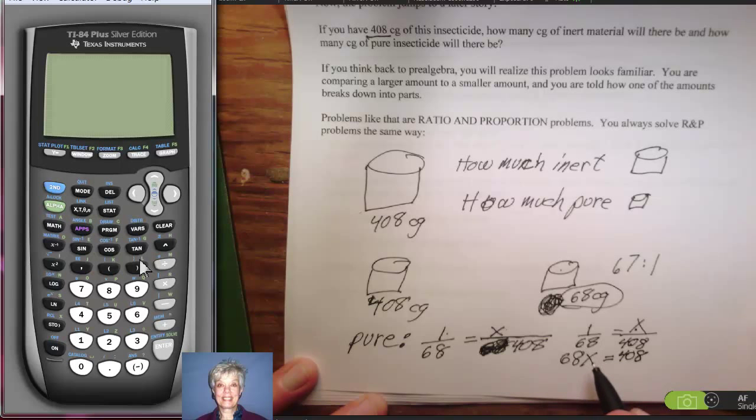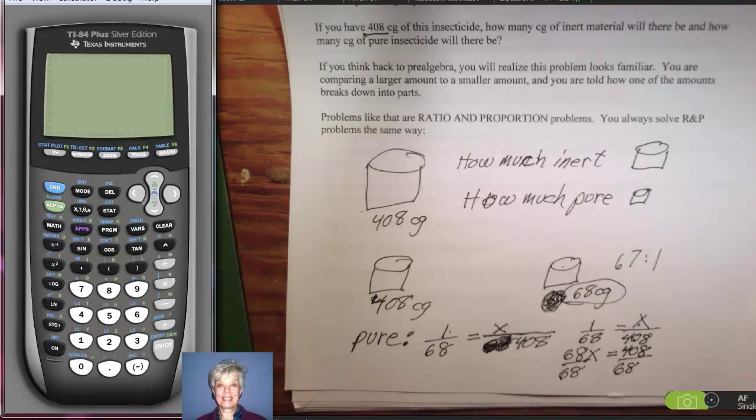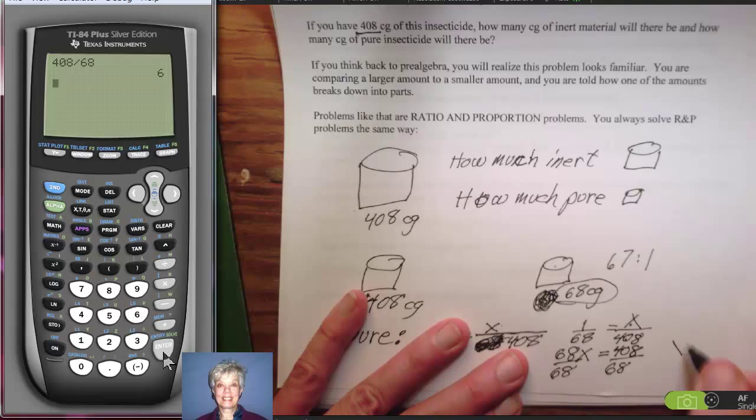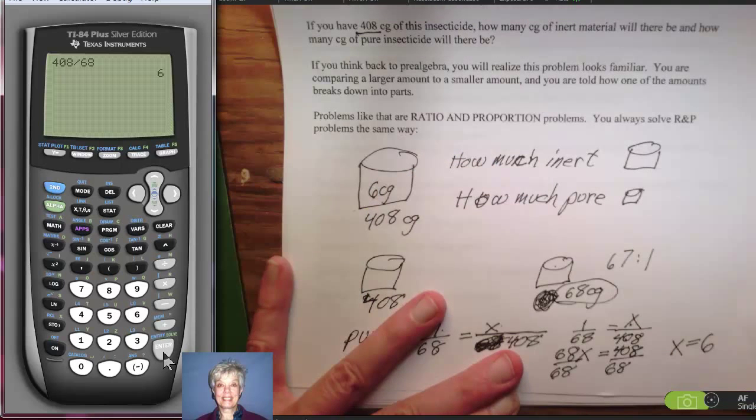Then, to solve for x, I'm going to divide by 68 and divide by 68 and use my trusty calculator over here. Turn it on. Clear it out. I want to know 408 divided by 68 is 6. So x equals 6.